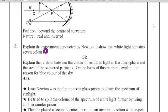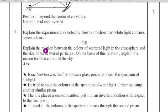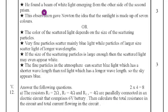Eleventh question, explain the experiment conducted by Newton to show that white light contains seven colors or explain the relation between the colors of scattered light in the atmosphere and the size of the scattered particles. On the basis of this relation, explain the reason for blue color of the sky. First question we will take. Sir Isaac Newton was the first to use the glass prism to obtain the spectrum of sunlight. He tried to split the colors of the spectrum of white light further by using another similar prism. He placed a second identical prism in an inverted position with respect to the first prism allowed all the colors of the spectrum to pass through the second prism.